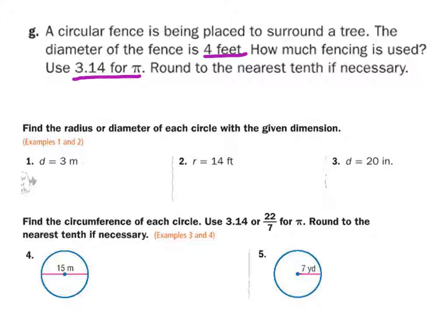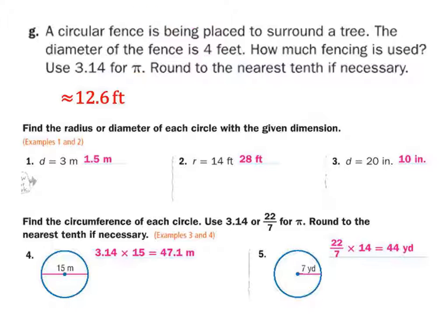The diameter of the fence is 4 feet, so the radius is 2 feet — that's just 4 divided by 2. If you use the diameter it's 4 times pi; if you use the radius it's 2 times 2 times pi, giving us about 12.6 feet. And here are the answers to the other examples if you wanted to try those out.